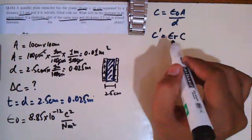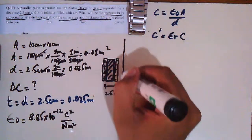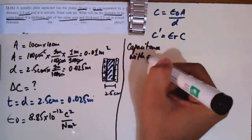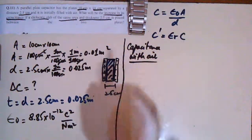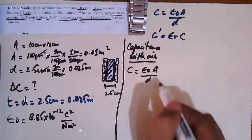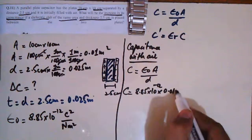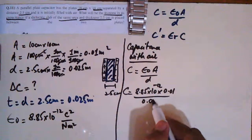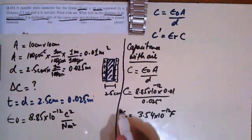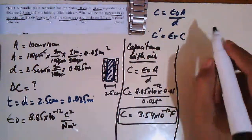When the capacitor is completely filled with a dielectric, the equation becomes C' = εᵣ × C. Now let's solve the problem. First, capacitance with air: C = ε₀ × A / d = 8.85 × 10⁻¹² × 0.01 / 0.025, which gives 3.54 × 10⁻¹² farad, or 3.54 picofarad.